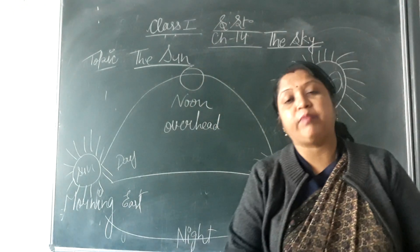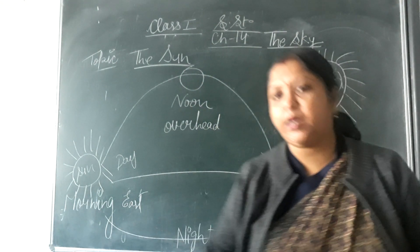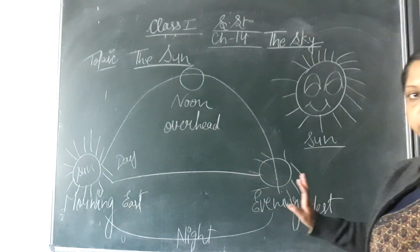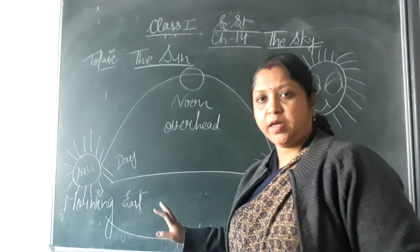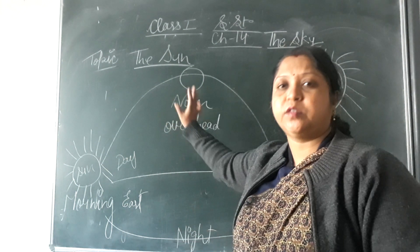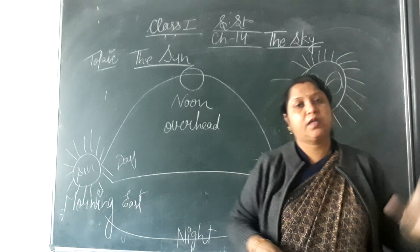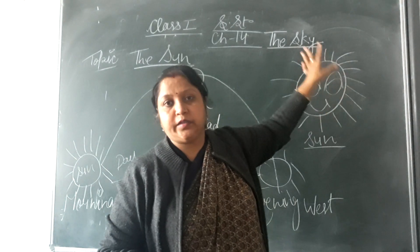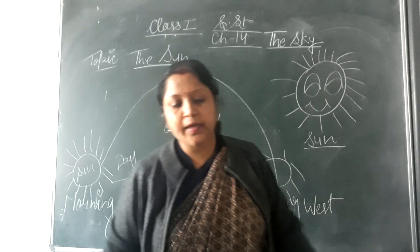The sun shines bright. The sun rises in the morning in the east direction and the sun sets in the west direction in the evening. When the sun is just overhead, it is noon. The sun gives us heat and light. Who gives you heat and light? Sun.